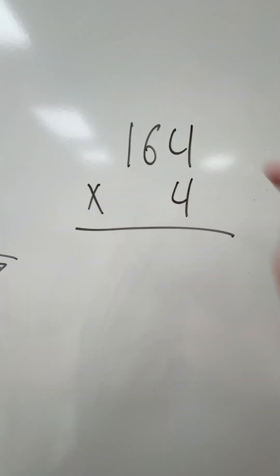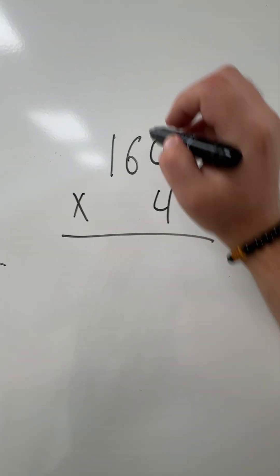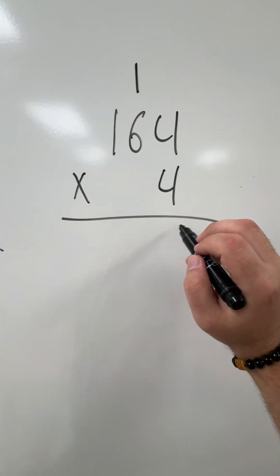So I have 4 times 4, that's going to be 16. I carry the 1, I drop the 6.